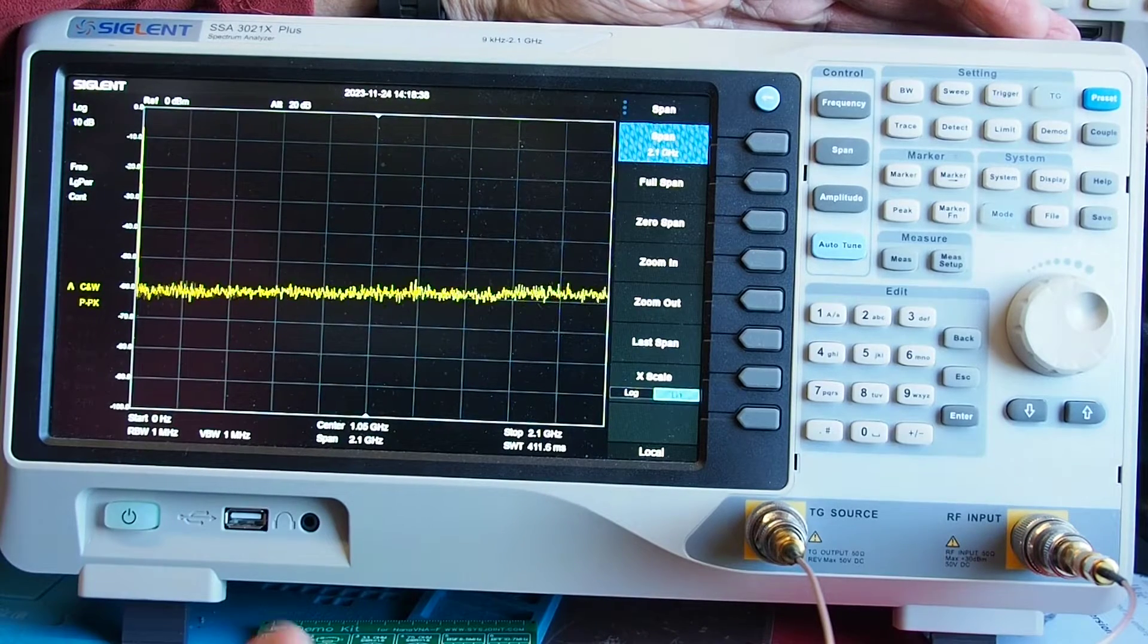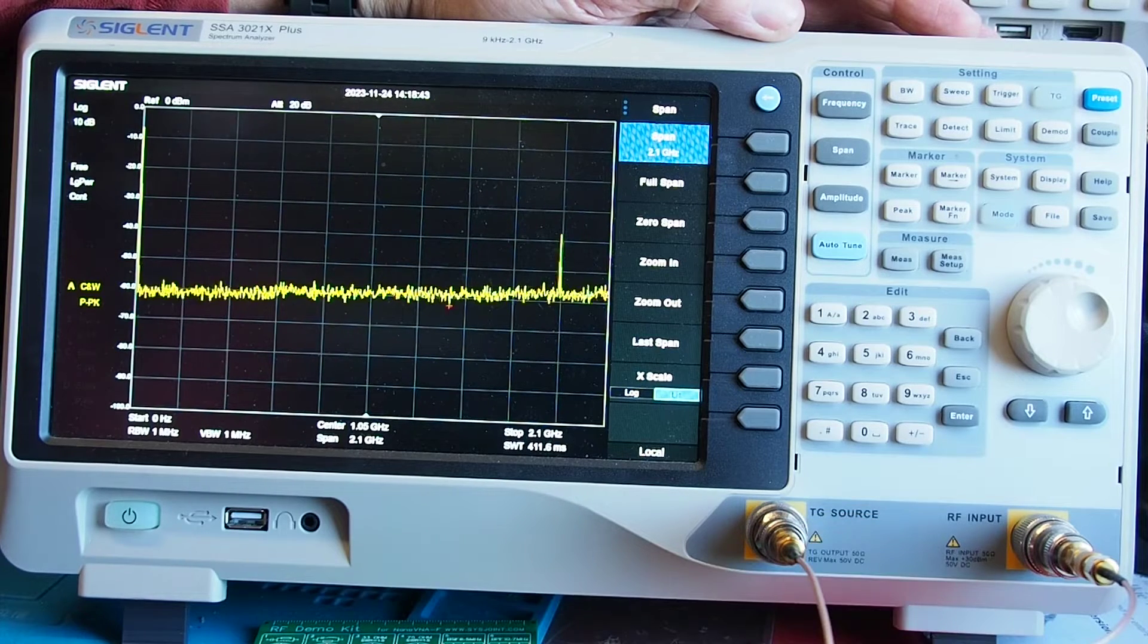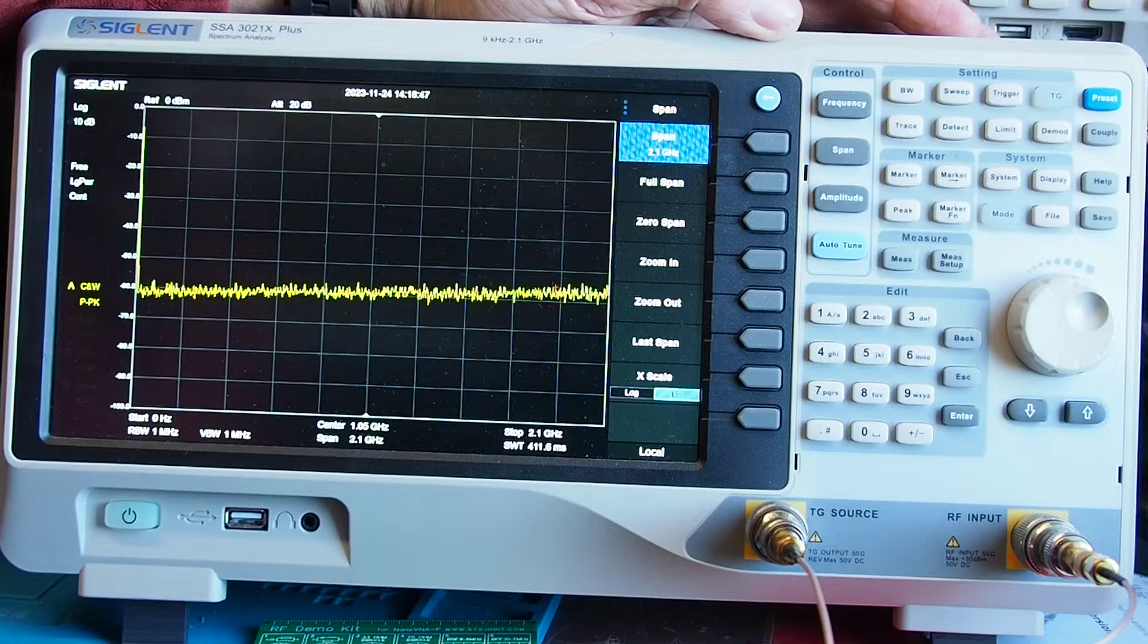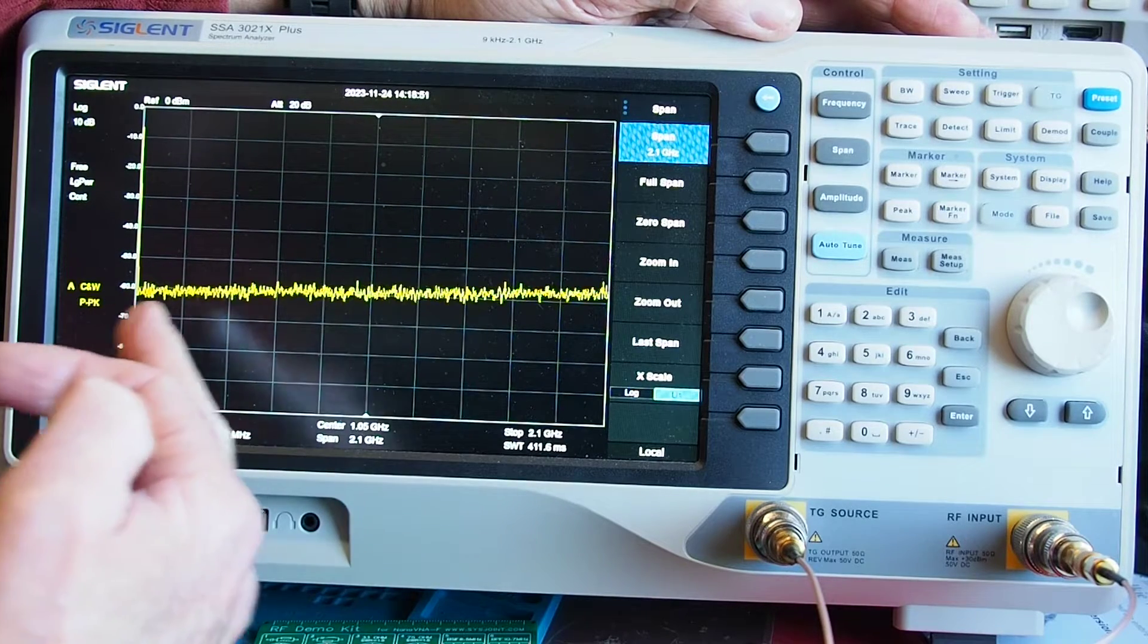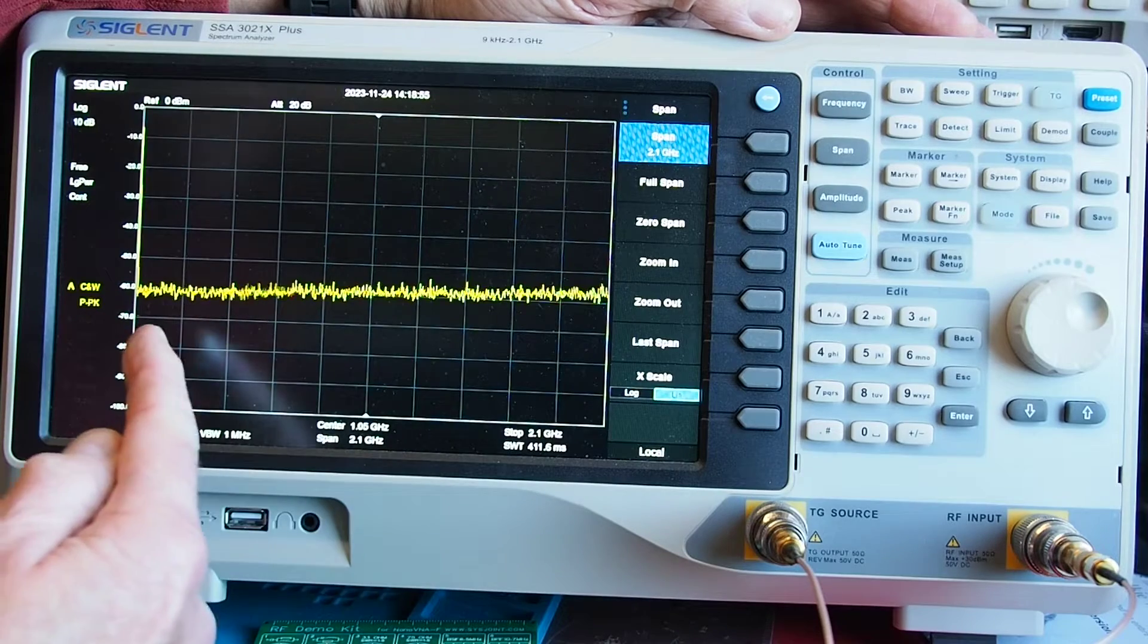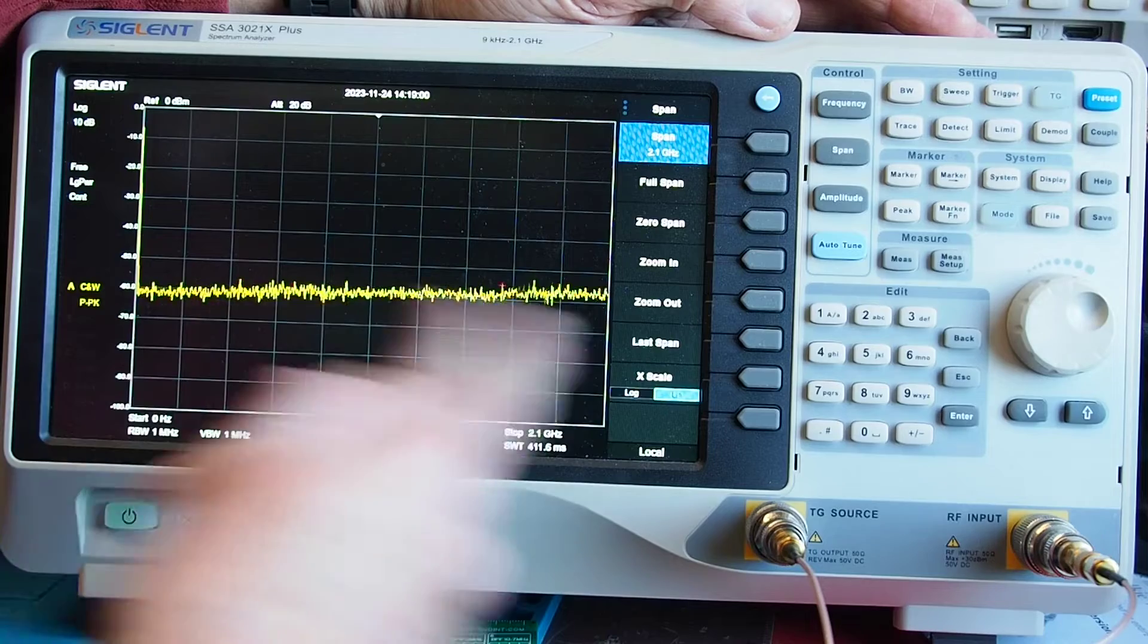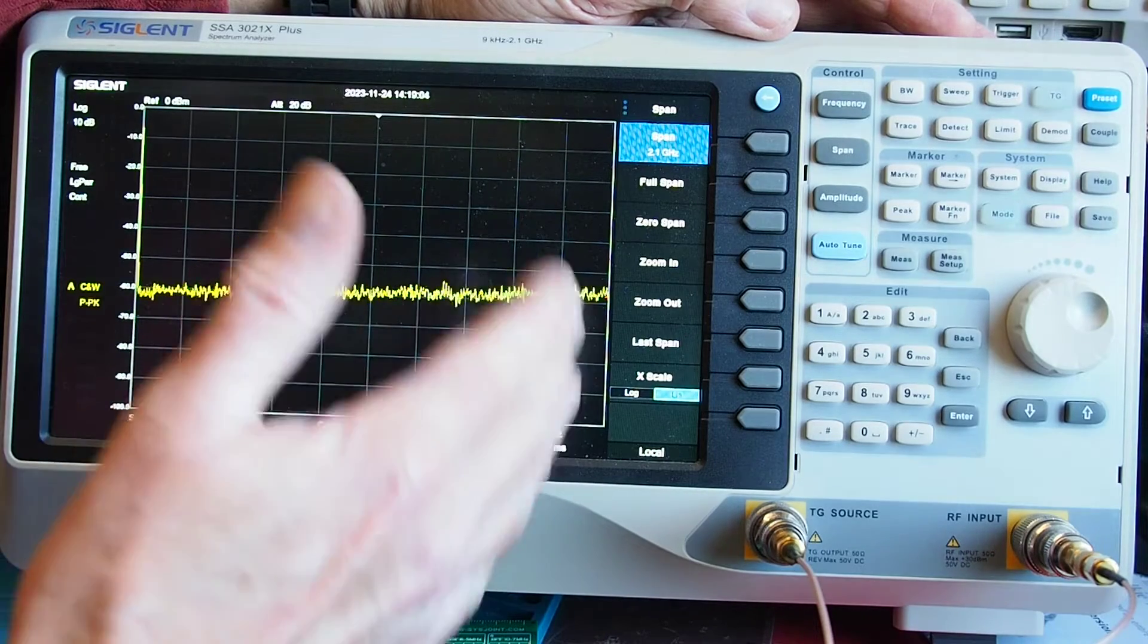Now a lot of spectrum analyzers have what's called a tracking generator as does this one and a tracking generator sounds a bit fancy but in reality it's a signal generator and the signal that it produces sweeps in sync with the scan of the analyzer and you can maybe see on here there is a red dot, this is sweeping across as it scans just over two gigahertz of band here.